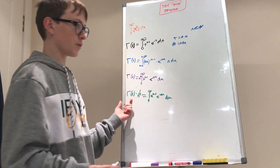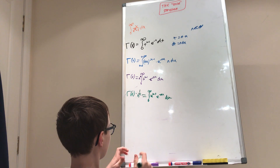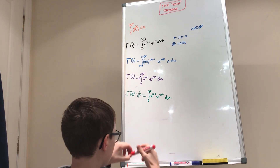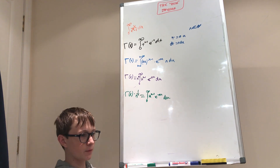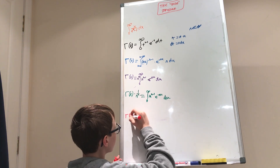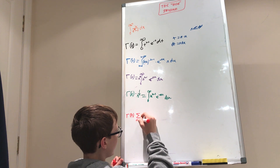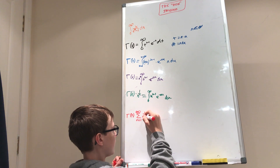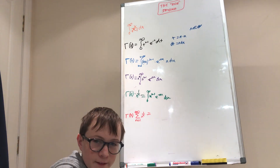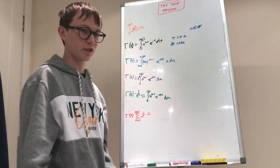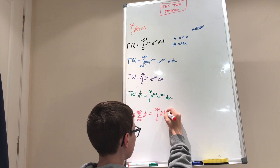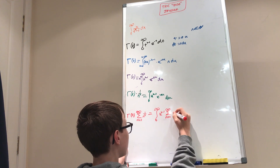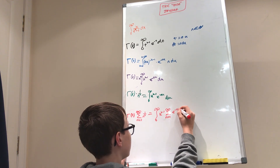And now we'll take the sum from n equals 1 to infinity. Because gamma of x is kind of just like a constant, we can bring this out to the front of the sum. So gamma of x times the sum from n equals 1 to infinity of 1 over n to the x equals — being part of the Flammy community, I will interchange the summation and the integral without any restrictions. So this equals the integral between 0 and infinity of u to the x minus 1 times the sum from n equals 1 to infinity of e to the negative u to the power of n. I wrote it this way because this is an infinite geometric series.